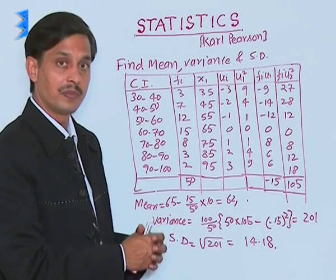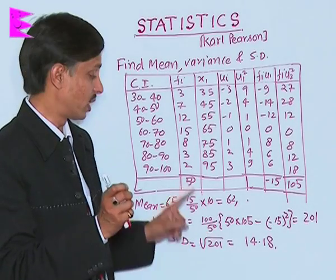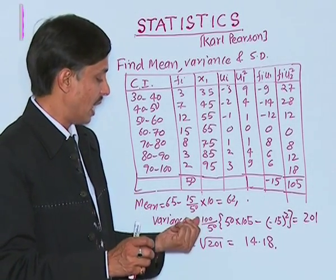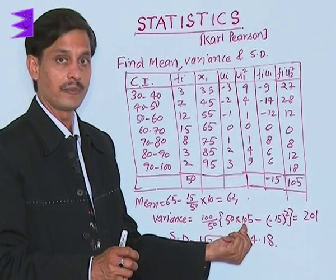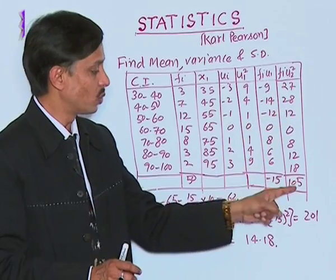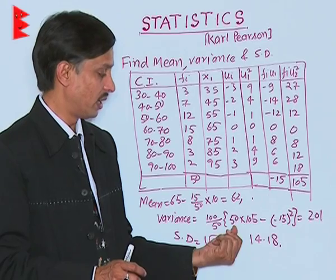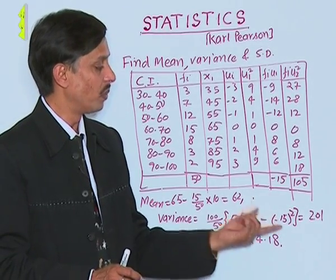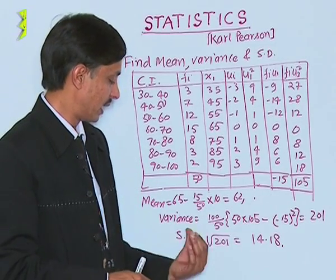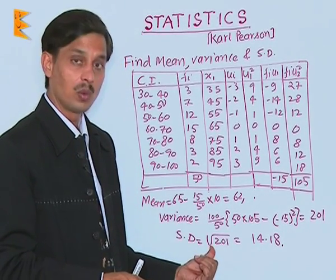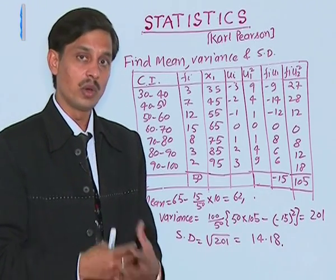For variance, the formula is (h²/n)[Σfᵢuᵢ² - (Σfᵢuᵢ)²/n²]. With h=10, n=50: (100/50)[105 - (15)²/(50)²] = 201. Standard deviation = √201 = 14.18.